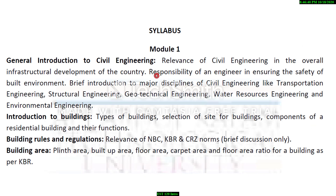In module one of the basic civil engineering course, we will learn about the relevance of civil engineering in the overall infrastructural development of the country, the responsibility of an engineer in ensuring the safety of the built environment, and a brief introduction to the major disciplines of civil engineering — transportation engineering, structural engineering, geotechnical engineering, water resources engineering, and environmental engineering.